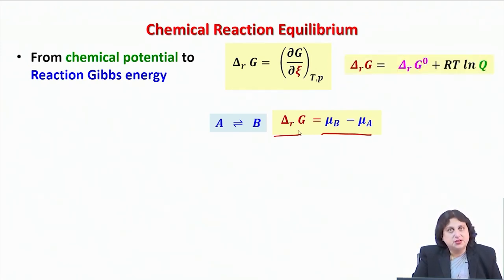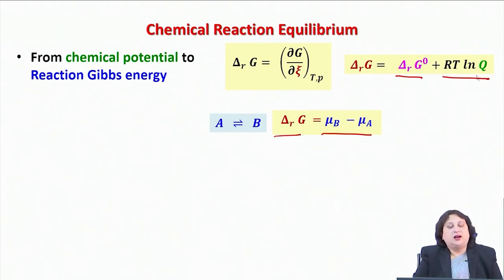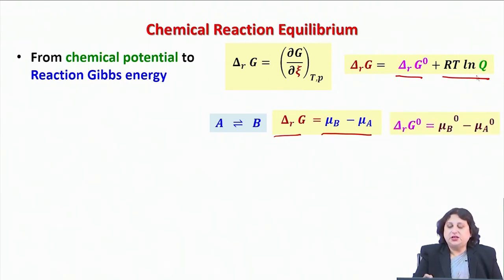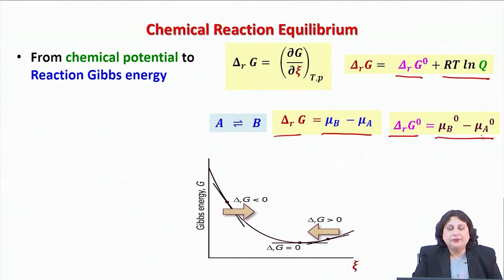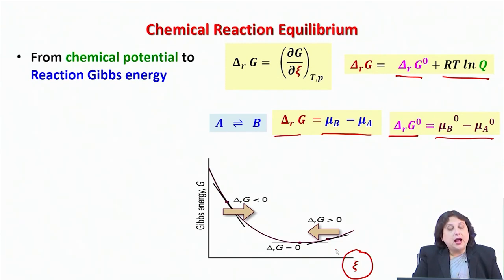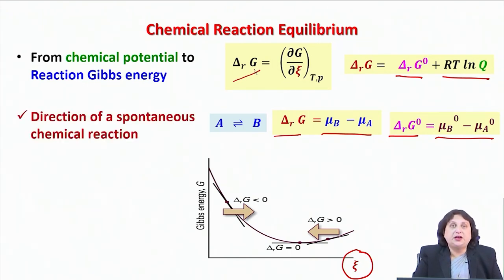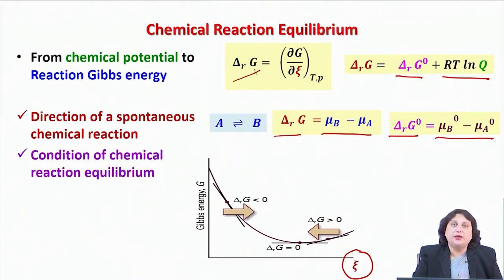We also showed in our previous lecture that δ_R_G is a sum of two quantities: δ_R_G° — the standard reaction Gibbs energy at one bar — and RT·ln(Q), which contains information regarding the composition of the reaction mixture at a given stage. By definition, δ_R_G° = μ_B° minus μ_A°. Knowing G as a function of ξ gives us the slope δ_R_G, and we can connect its sign to the direction of spontaneous chemical reaction and the condition of chemical reaction equilibrium.